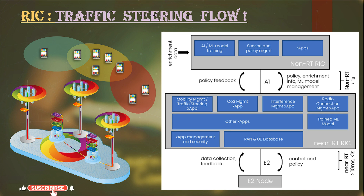All this data is continuously monitored and fed back to the Non-Real-Time RIC. Based on the collected data from all cells, Non-Real-Time RIC will trigger decisions to release more resources from the pool, or size up and size down over-utilized and under-utilized cells. This decision is then handled by Near Real-Time RIC, which allocates more resources to the OCU and ODU to balance resources in the respective cells.